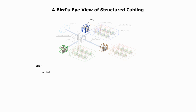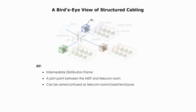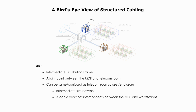IDF stands for intermediate distribution frame, a joint point between the MDF and a telecom room. But it can be the same as, or confused with, a telecom room or closet enclosure — it depends on the size of the organization. For a small-size network, it may only have a telecom room. IDF can be used for an intermediate-size network, or it is simply a cable rack that interconnects the MDF and workstations. So it can be very confusing.